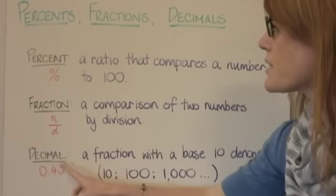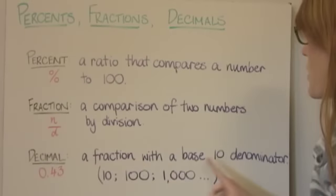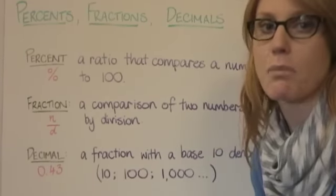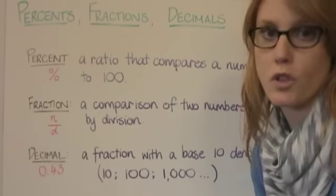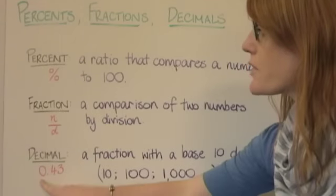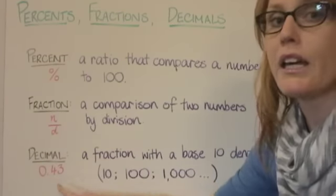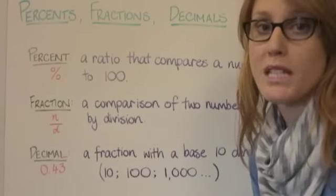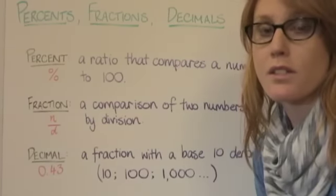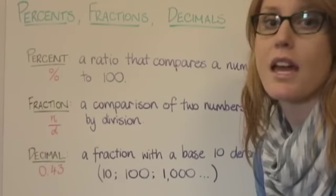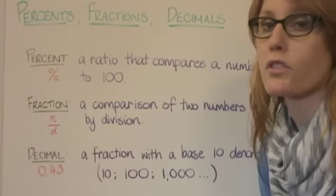A decimal is a fraction with a base 10 denominator — for example, 10, 100, or 1000. So a decimal of 0.43 represents 43 hundredths, and the base 10 denominator in this case would be 100.